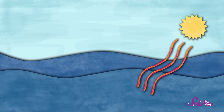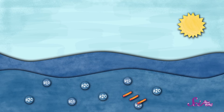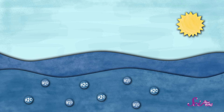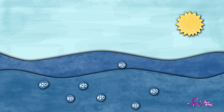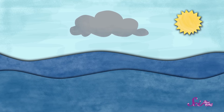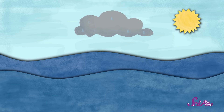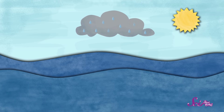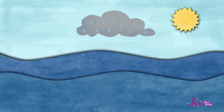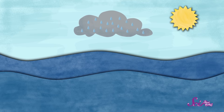When the sun shines on rivers, lakes, and oceans, some of the water changes into water vapor. Then the water vapor goes up high – very high – up into the sky. And it gets pretty cold up there. So when the water vapor gets high enough, it starts to get cool, and as water vapor cools down, it changes back into little drops of liquid water.